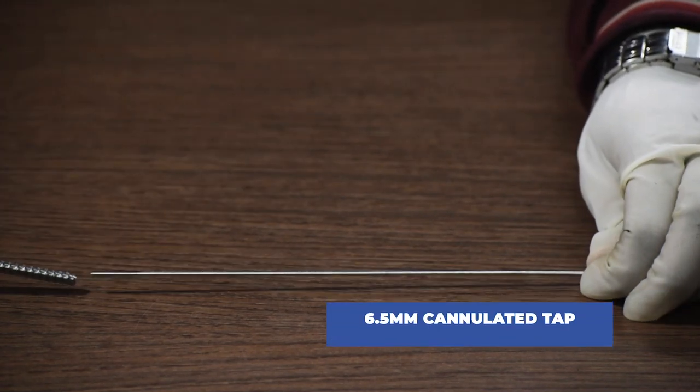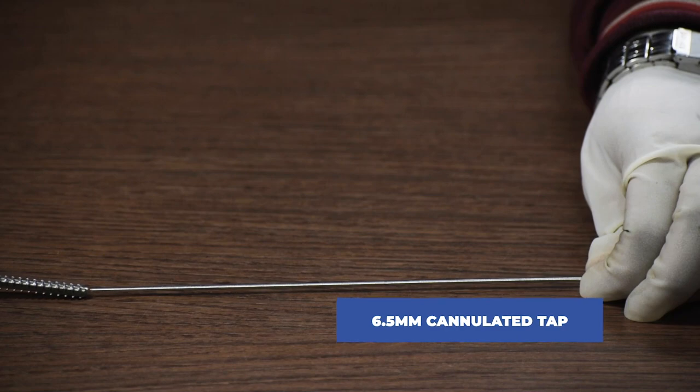After checking the measurement, we will use a 4.5mm cannulated drill bit to drill. Once the drilling is done, we will use a 6.5mm cannulated tap to tap.